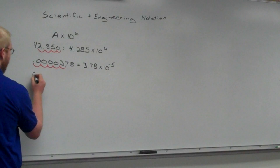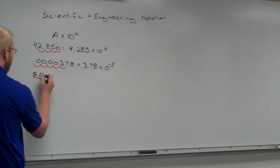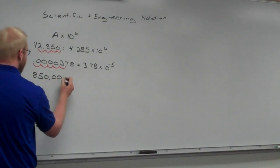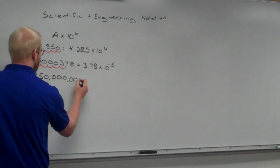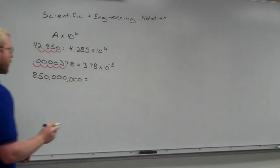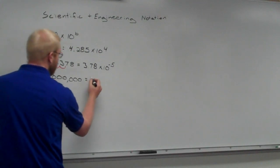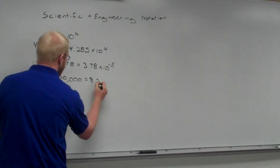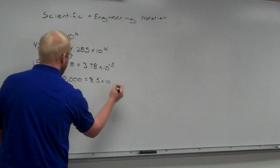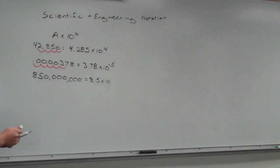So, let's go ahead and say we had 850 million. So, what's the number going to be? 8.5 times 10 to the 8th. To the 8th, you're saying? Yes. Okay.